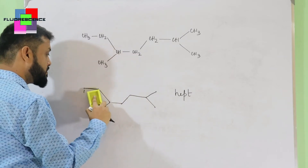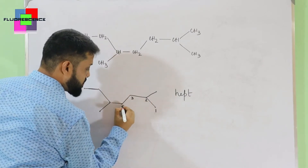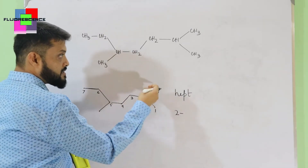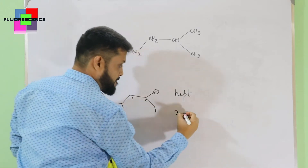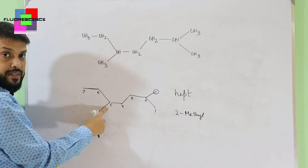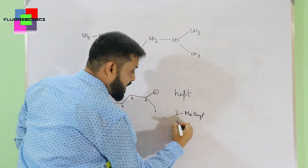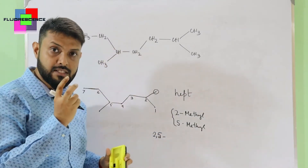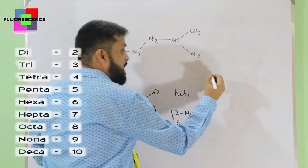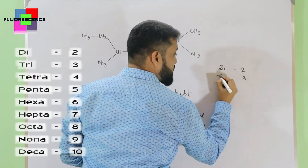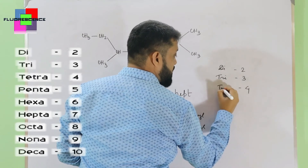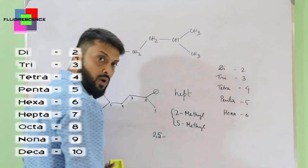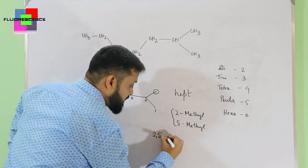From locant 2, a single carbon is coming out — a single carbon means it's methyl, so we have 2-methyl. At locant 5, we also get another methyl — so 5-methyl. Now we fuse these two: we write 2,5, and since we have identical substitutions appearing twice, we use the prefix 'di'. If a substitution comes three times we use 'tri', four times 'tetra', five times 'penta', six times 'hexa', and so on. Since methyl appears twice, we write 2,5-dimethyl.